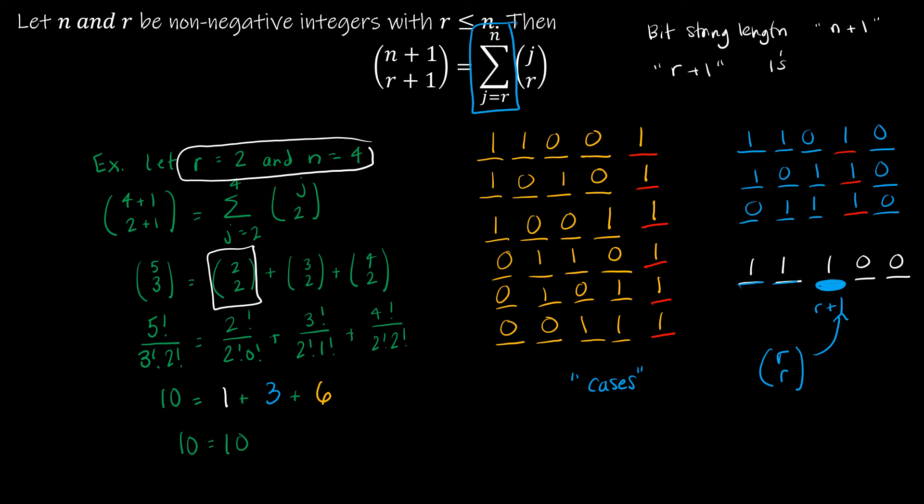So looking at 2 choose 2. Then we think about what happens if it's actually moved to the right one. So again.